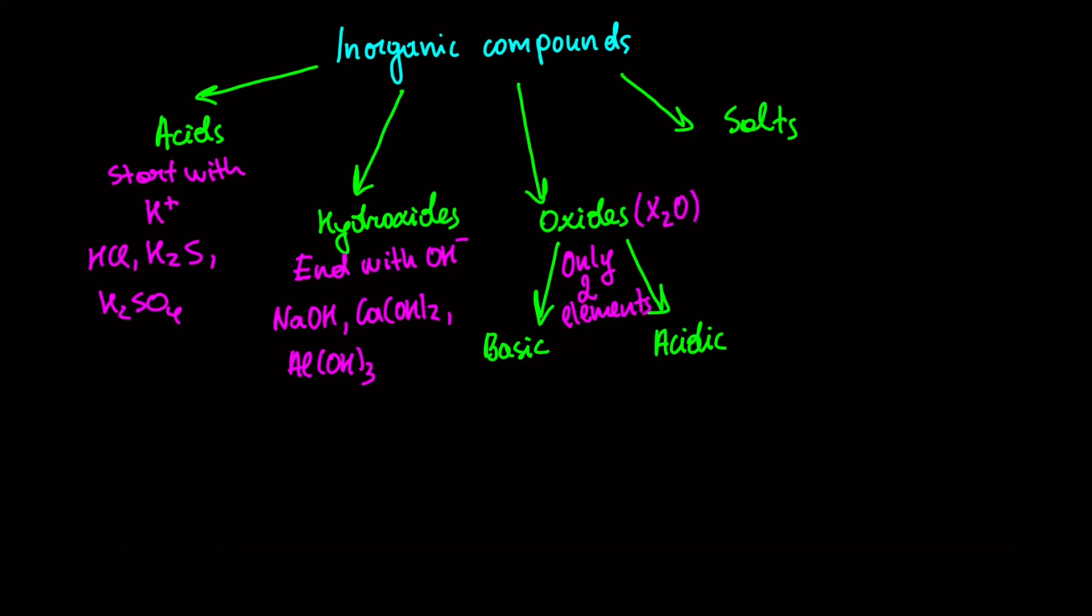Now basic oxides are also called metal oxides because they have metal in their composition. A few formulas for basic oxides: Na2O, CaO, and Al2O3. As you can see, all basic oxides are only made from two elements. One is metal and the other is oxygen.